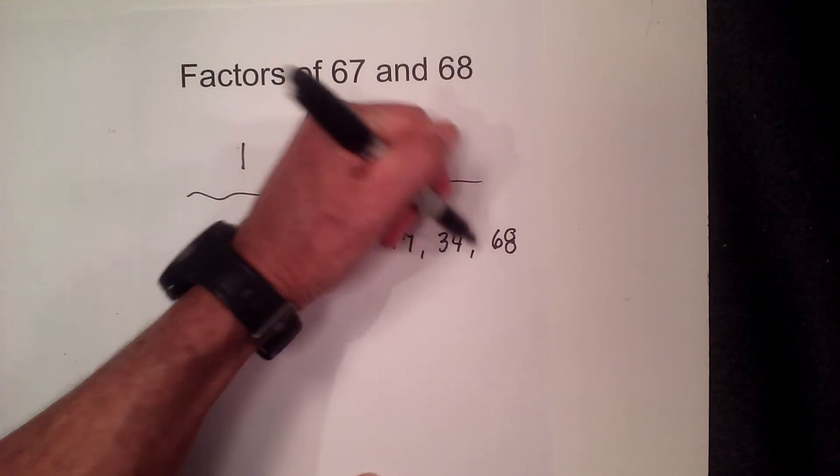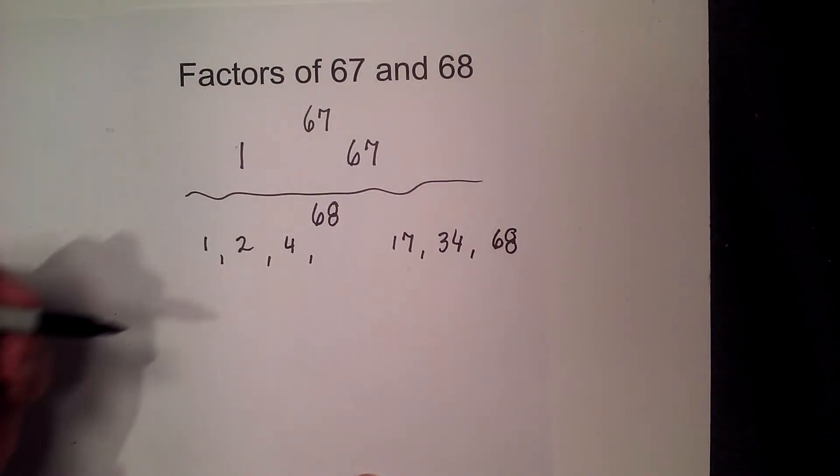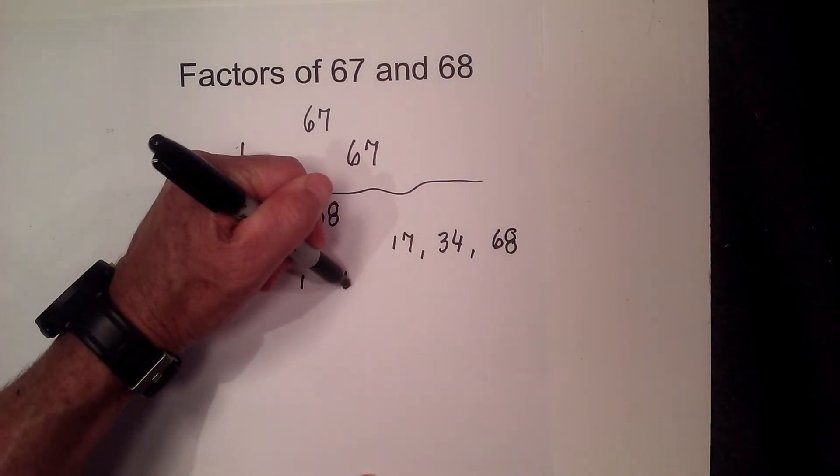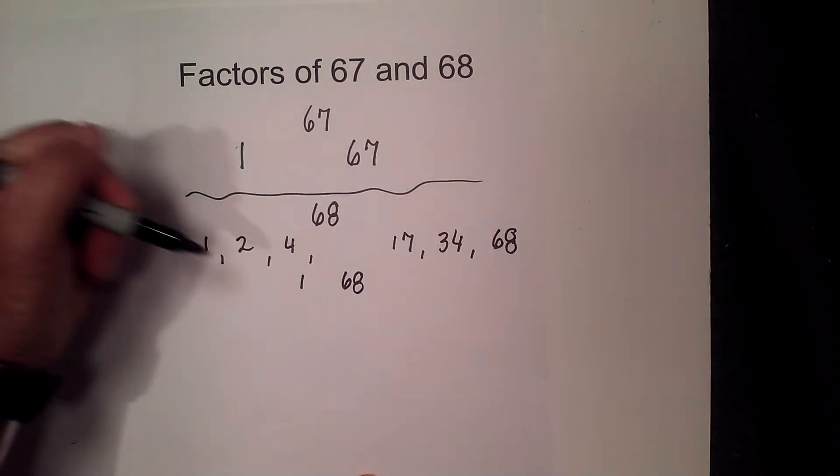2, 4, 17, 34, 68. And if you want to see the pairs that multiply together, it's 1 times 68,